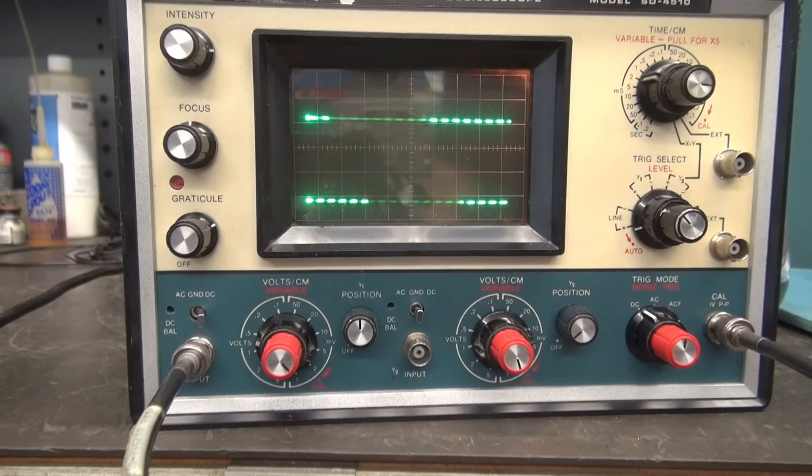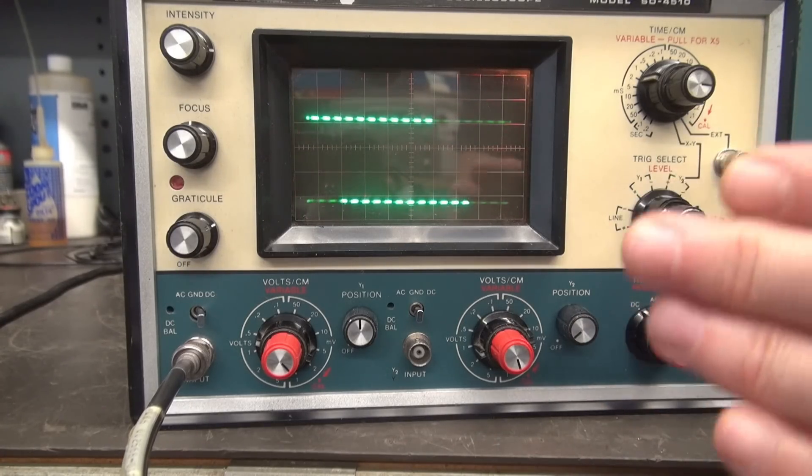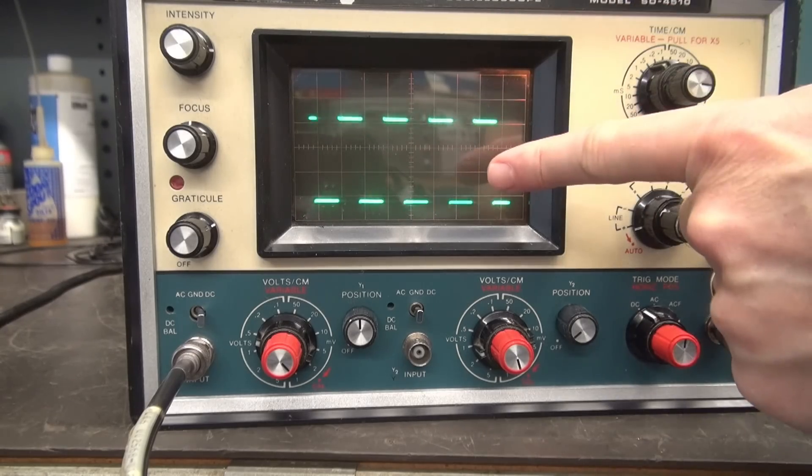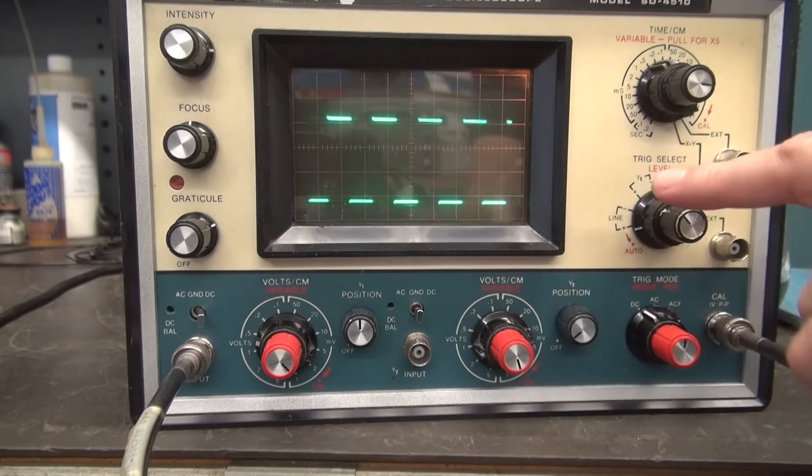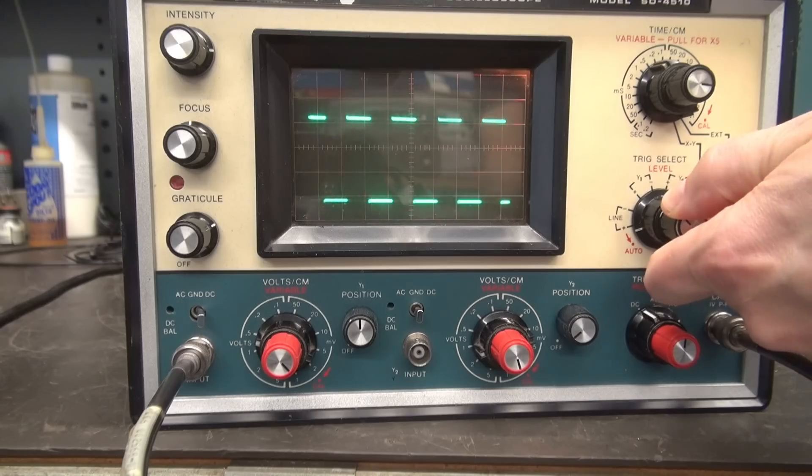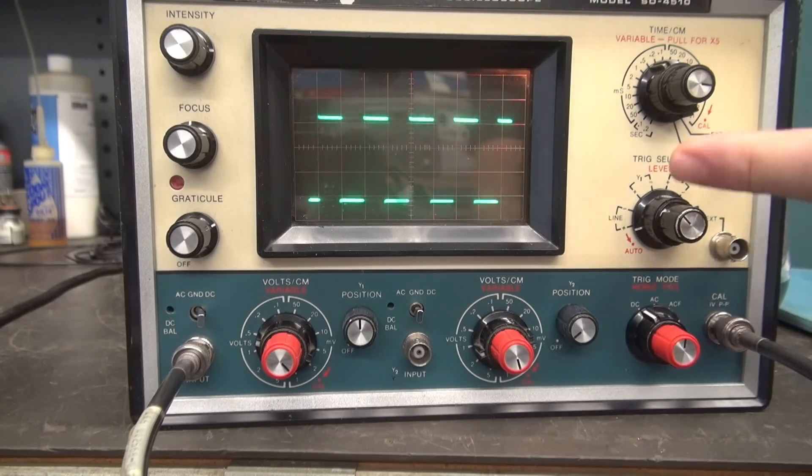Alright, for this test I'm using the built-in calibrator and we're going into channel one. So normally you'd see a square wave like this for your calibrator. As you notice, it's just free running.